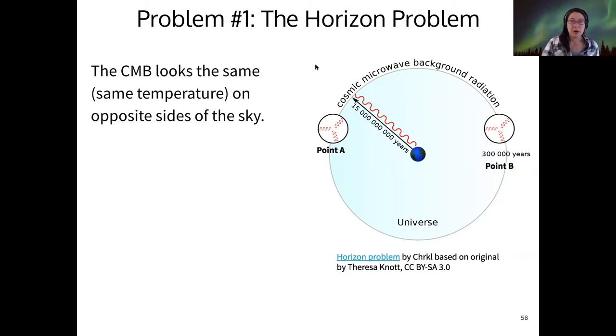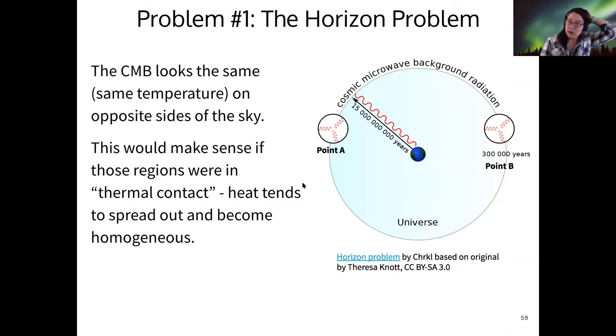So this is what we call the horizon problem. It's called horizon because on different ends of our horizon, we see that the CMB has the same temperature. It makes sense that any local region within that point would have the same temperature. Parts within point A and parts within point B could have the same temperature internally, but they shouldn't be the same on opposite parts of the sky. If those points were once in thermal contact, then this problem would be solved. Were they once in thermal contact?